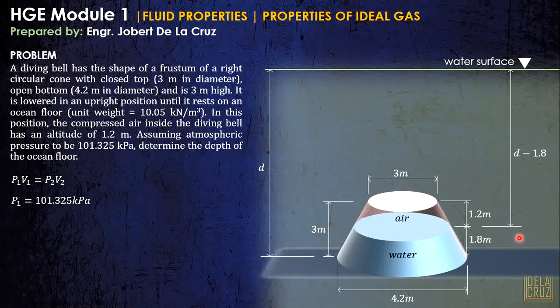From here, we can calculate the pressure of this air, just gamma of the water times this depth. But take note, we need to use the absolute pressure. So, the P2 we need to use here is just atmospheric pressure plus the gauge pressure. Take note, this is the gauge pressure due to the liquid, 9.81 times its depth, that is d minus 1.8.